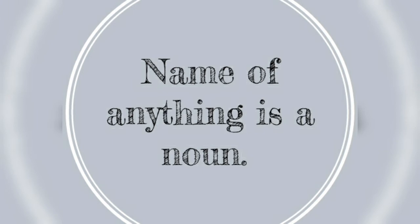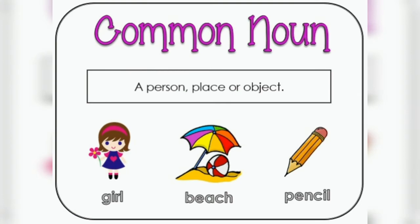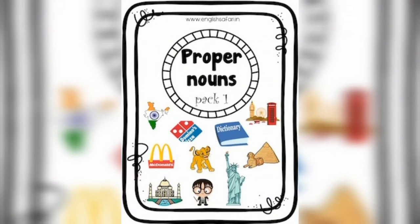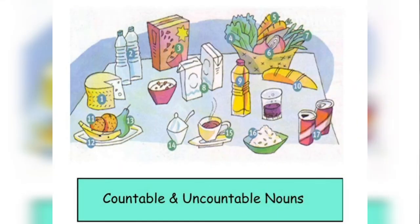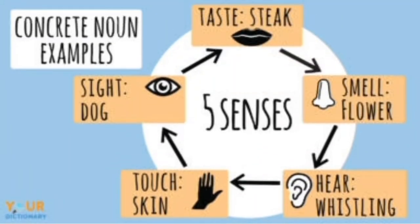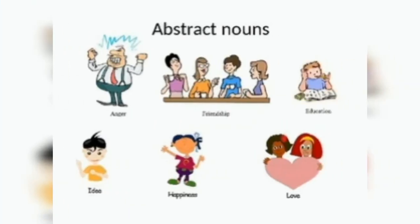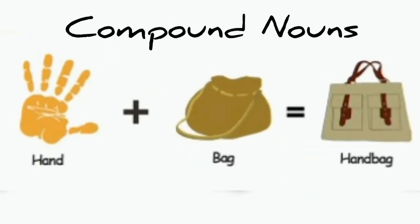There are commonly ten types of noun. Common noun: these are common among people or things of the same class or kind. Proper nouns: these refer to a particular person or place. Countable and uncountable nouns. Concrete nouns: these can be identified through one of the five senses. Abstract noun: that is the name of quality, action, or state. Compound noun: made up with the combination of two nouns.